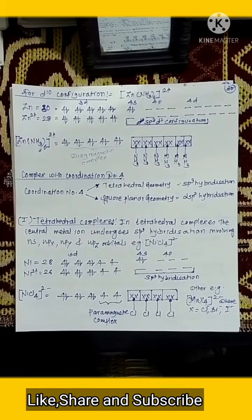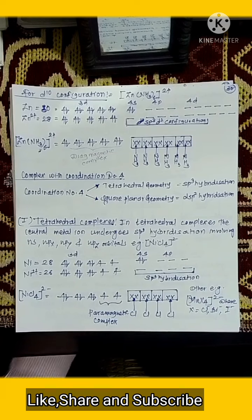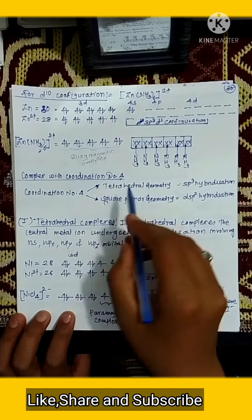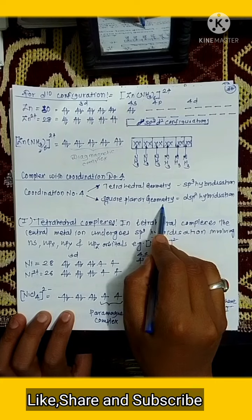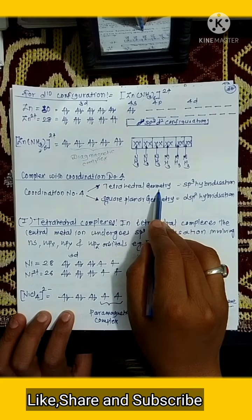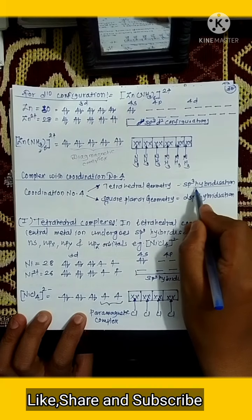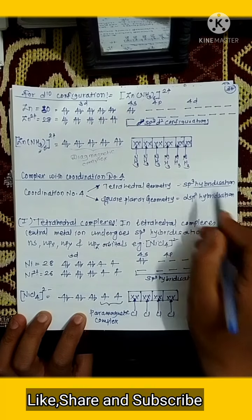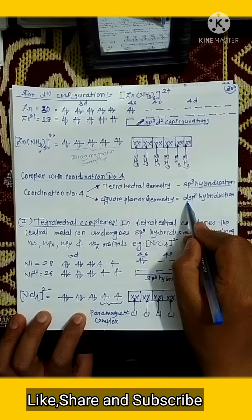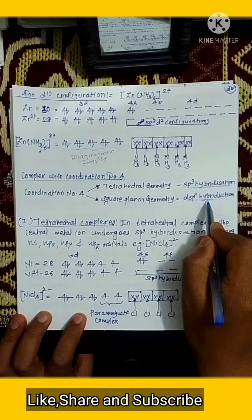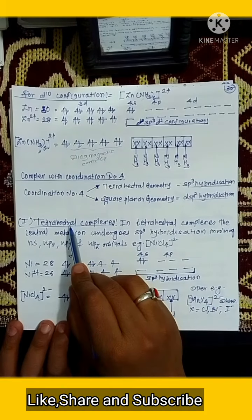Good morning, students. Today we are going to see the topic: complexes with coordination number 4. Coordination number 4 has two types of geometry — tetrahedral geometry and square planar geometry. When tetrahedral geometry is formed, sp3 hybridization takes place in the central metal atom. When square planar geometry is formed, the central metal atom undergoes dsp2 hybridization. We will first see complexes having tetrahedral geometry.